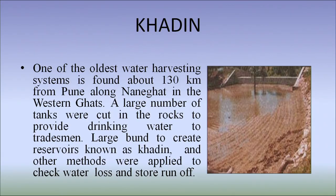One of the oldest water harvesting systems is found about 130 km from Pune along Naneghat in the Western Ghats. A large number of tanks were cut in the rocks to provide drinking water to tradesmen. Large bunds to create reservoirs, known as Khadins, and other methods were applied to check water loss and store runoff.